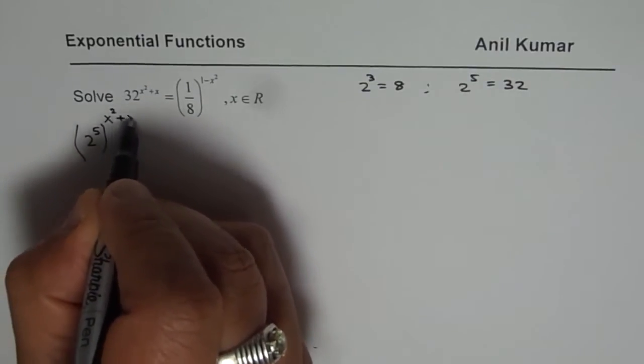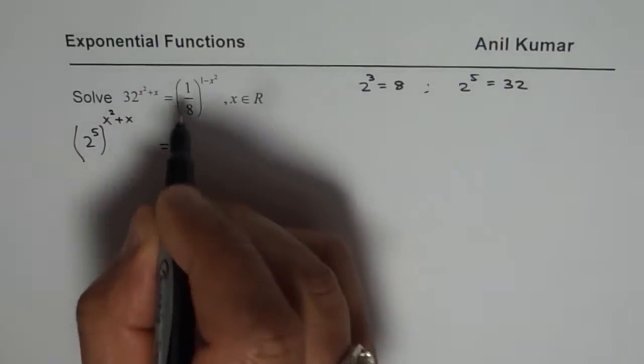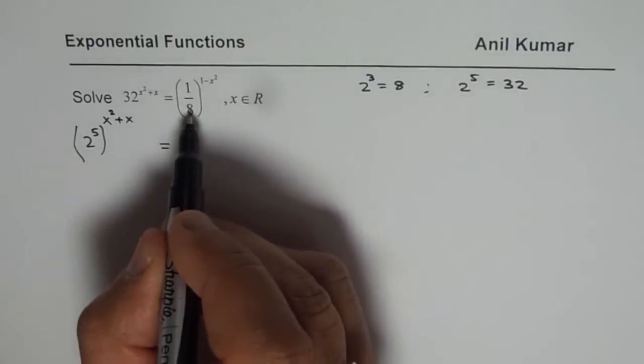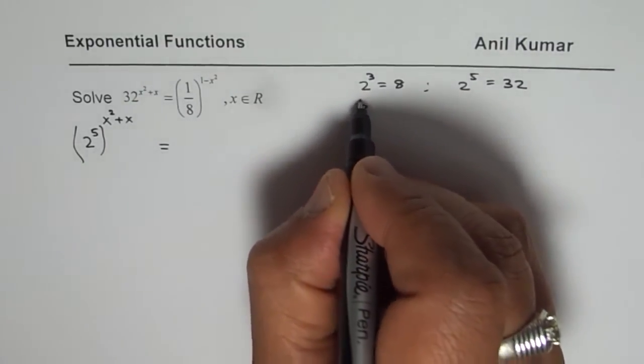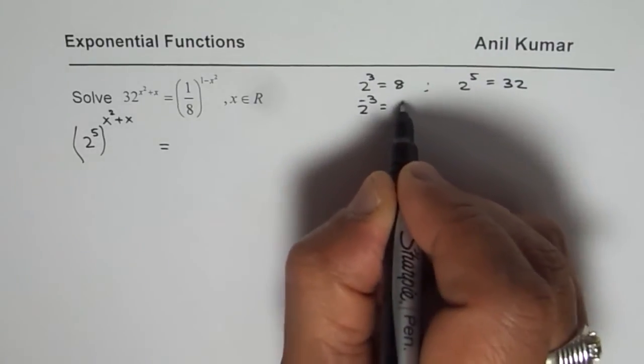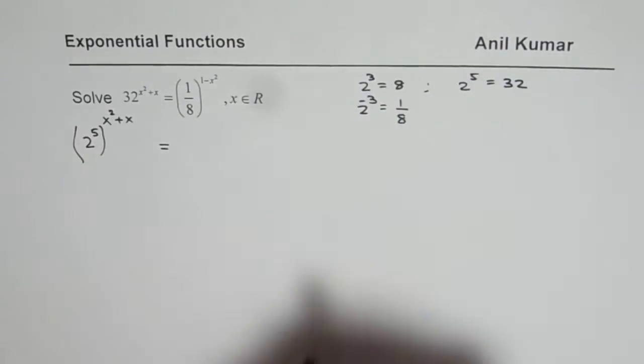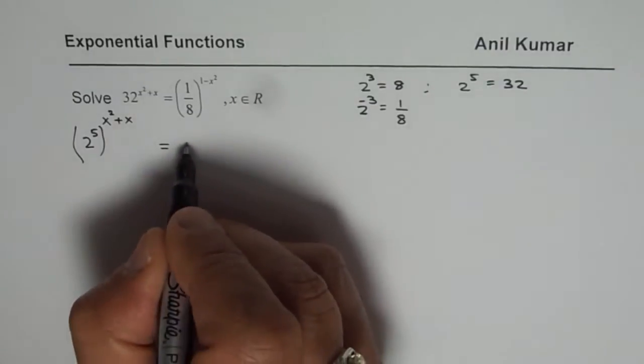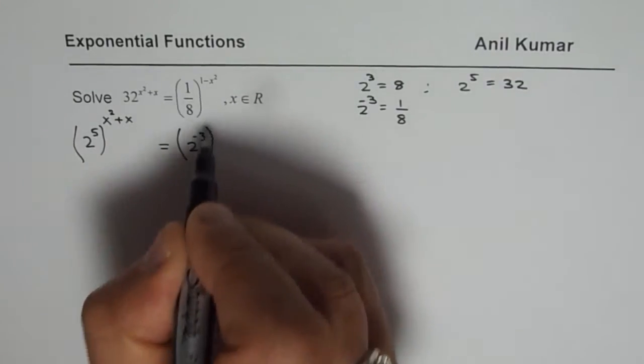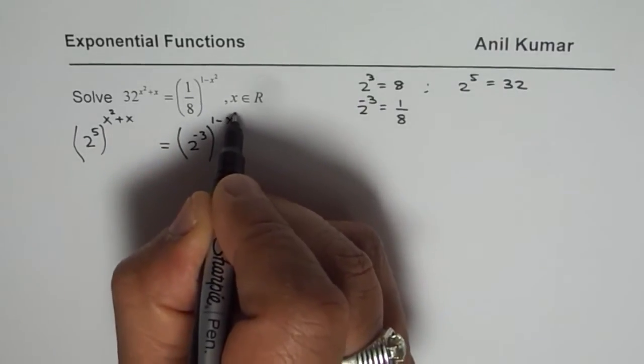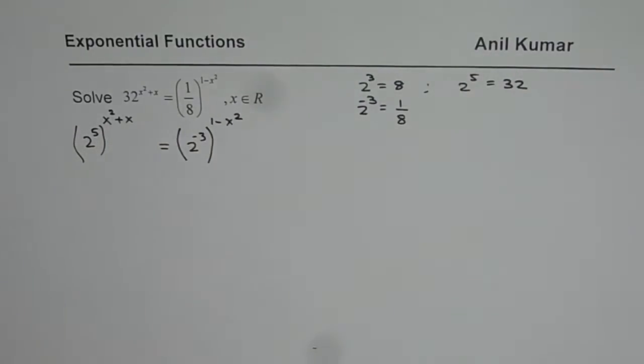On the right side I will write 1 over 8, since it is 1 over 8 I will write this as 2 to the power of minus 3. 2 to the power of minus 3 will be 1 over 8. So 1 over 8 I will write this as 2 to the power of minus 3 and that to the power of 1 minus x square. We are using the laws of exponents to solve these equations.